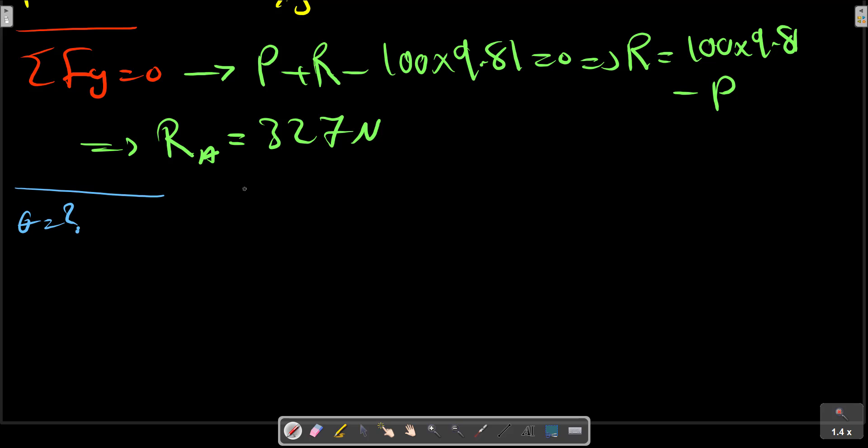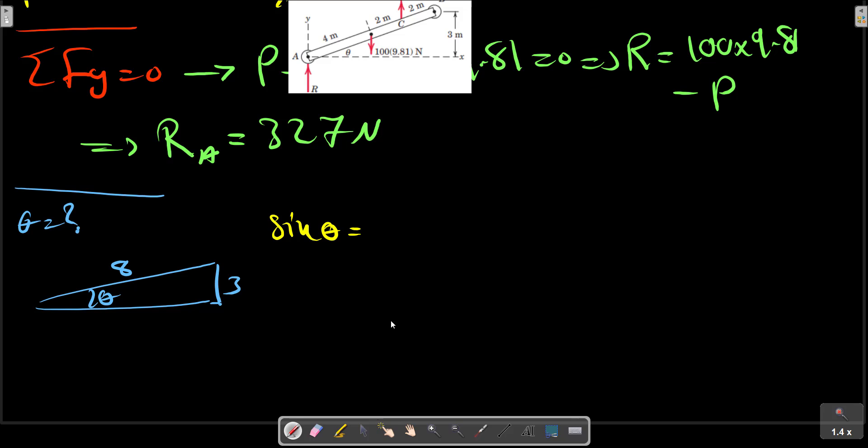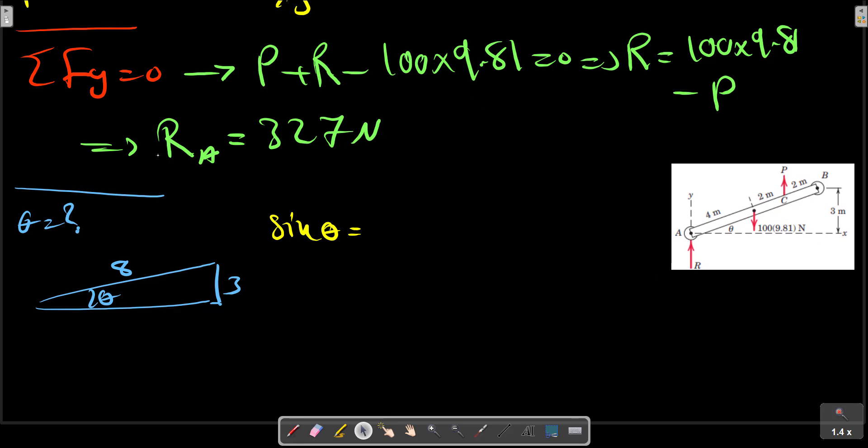Theta can be calculated from this triangle here. Sin theta equals 3 over 8. Theta equals sin inverse of 3 over 8. You can use the scientific calculator.